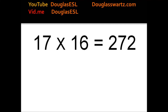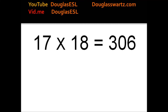17 times 16 equals 272. 17 times 17 equals 289. 17 times 18 equals 306. 17 times 19 equals 323.